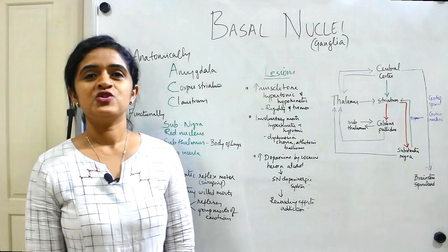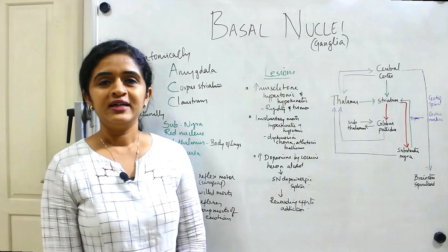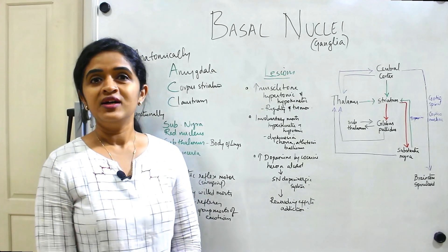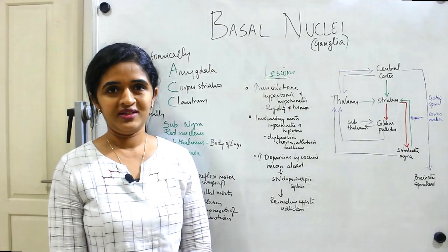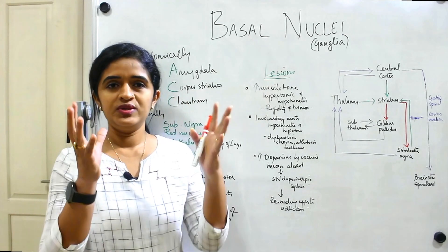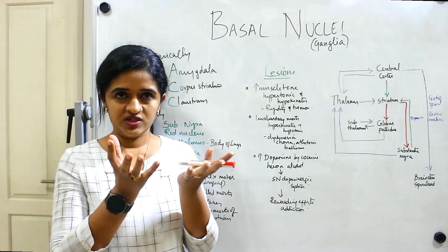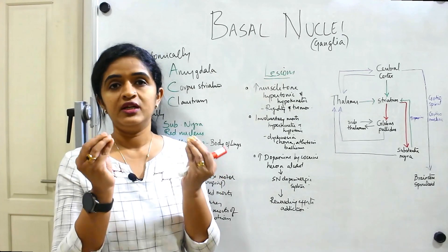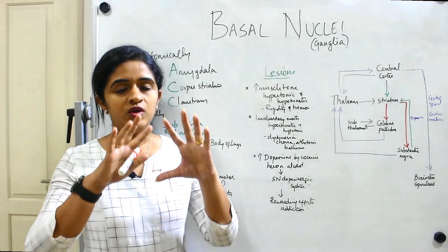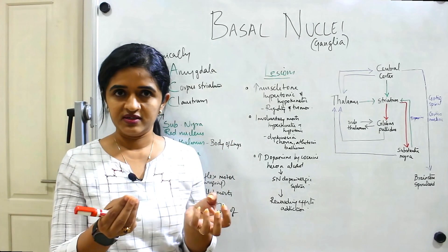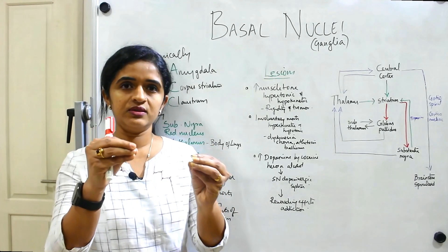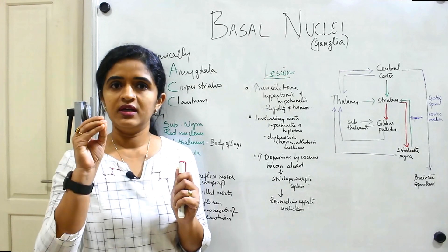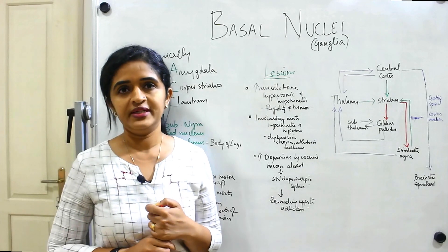Welcome back to my channel. This session is a topic from neuroanatomy — many of you have asked me to do a session on this. This is part one of basal ganglia. Basal ganglia is actually replaced by the term basal nuclei — the gray matter seen in the brain. It is called 'basal' because in the white matter of the two cerebral hemispheres, at the basal region, you get some clusters of neurons — that is what you call basal nuclei, previously known as basal ganglia.